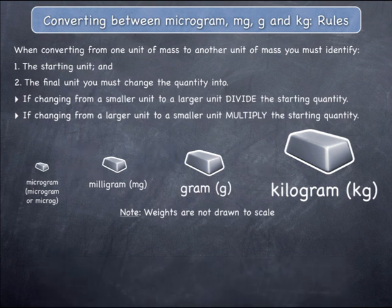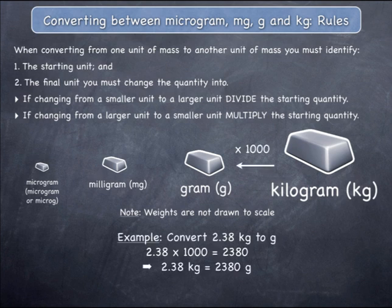Now let's consider three examples where a larger unit is changed into a smaller unit. If you are changing a quantity from kilograms to grams, you must multiply the starting quantity by 1000, as the example shows.